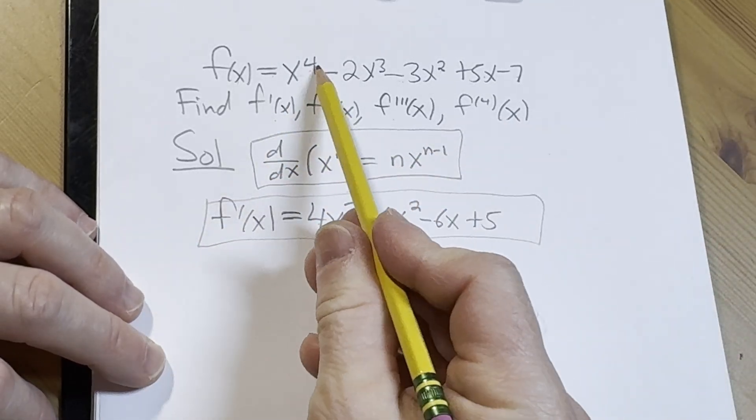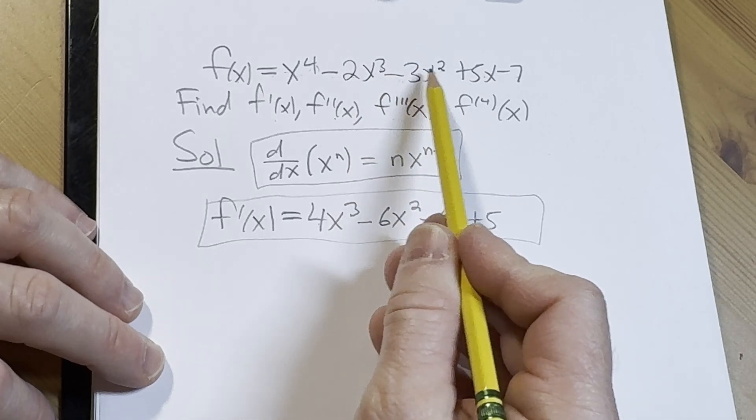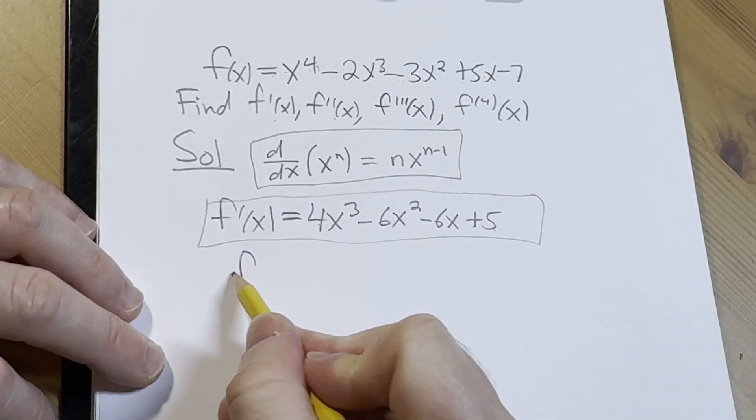Let's double check that. 4x^3 - 6x^2 - 6x + 5. Let's do it again.